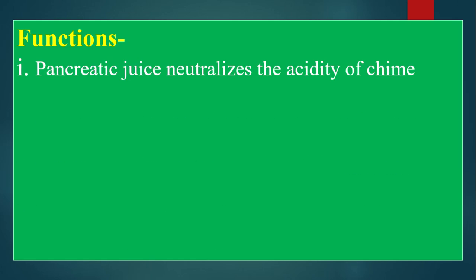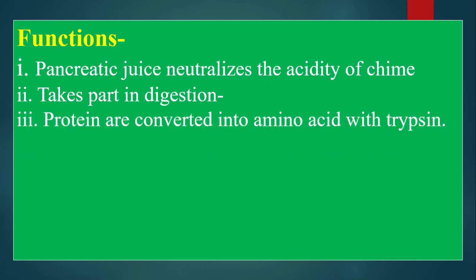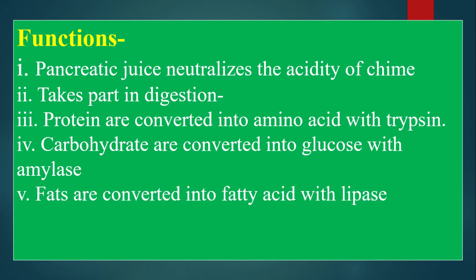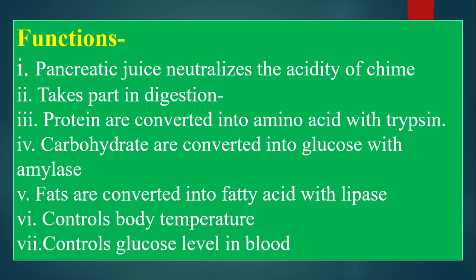Functions of the pancreas: pancreatic juice neutralizes the acidity of chyme and takes part in digestion. Proteins are converted into amino acids by trypsin. Carbohydrates are converted into glucose by amylase. Fats are converted into fatty acids by lipase. The pancreas also controls body temperature and regulates glucose levels in the blood.